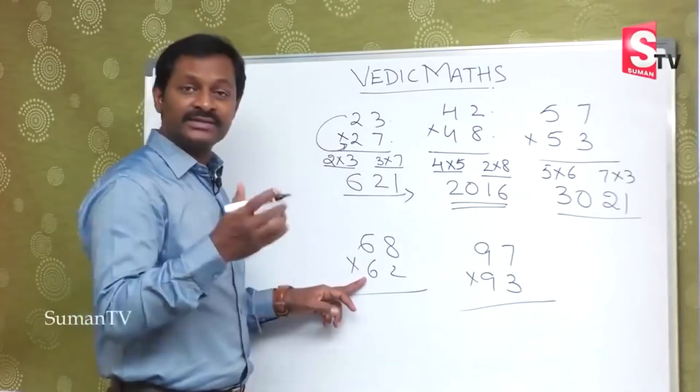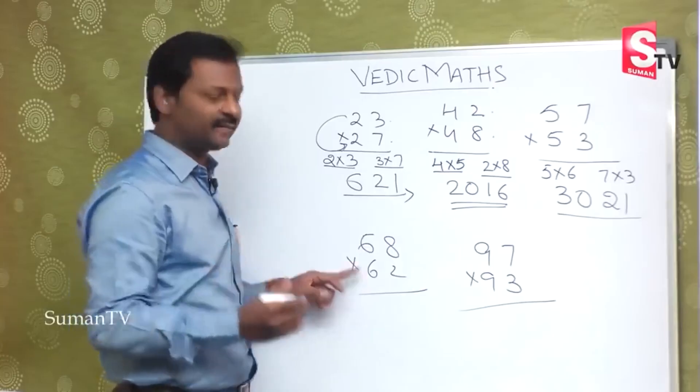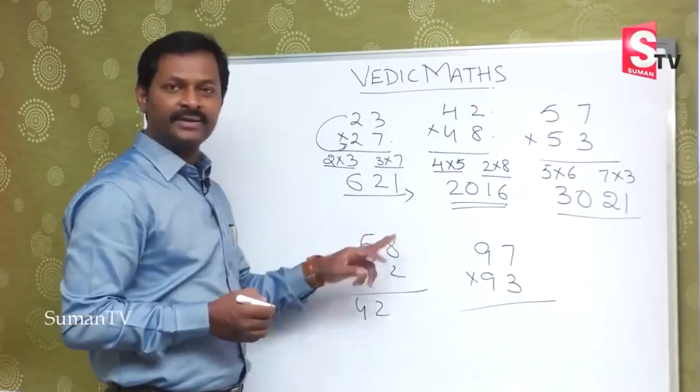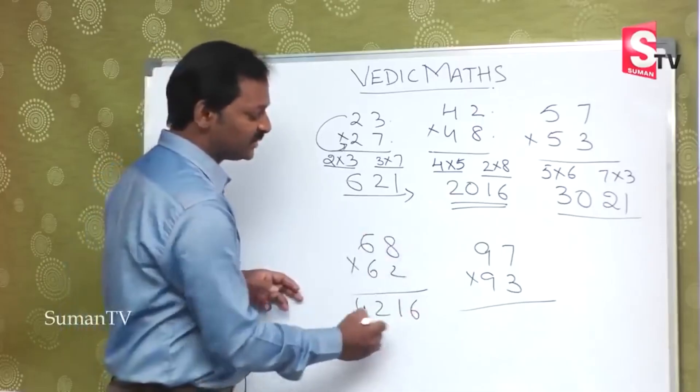So 6 and 6 is given. 6 into 7, 6, 7 is 42. And next 8 and 2, 8, 2 is 16. This is the answer.